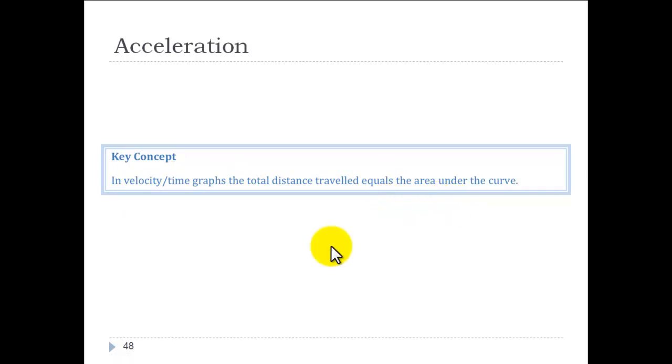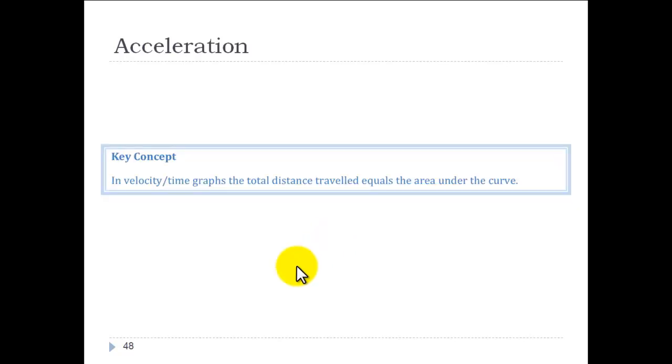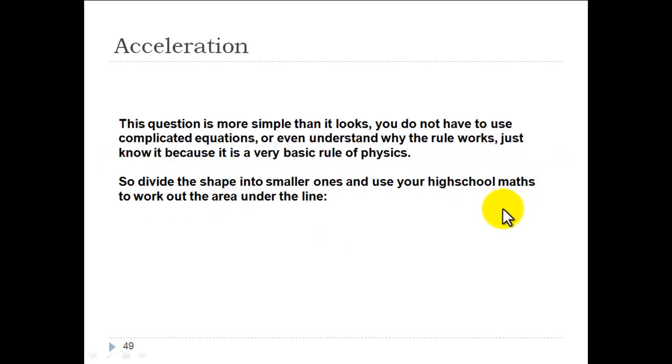For those of you that want to know more about why this works, you can look into a textbook on calculus. Basically, by finding the area under the curve, we're finding the integral of the acceleration. You won't need to know very much in depth. You'll just need to remember that in velocity versus time graphs, total distance is the area under the curve. The question is much more simple than it looks. Just know the very basic rule of physics.